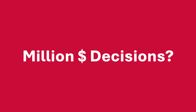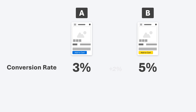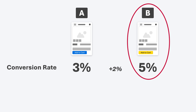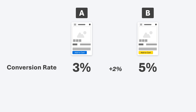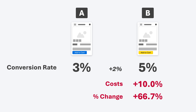You might be wondering how this really helps you make million-dollar decisions. Even if you thought it was a 2% difference, you'd still always go with page B. But if page B comes with costs of an additional 10%, then you might not make that same decision and stick with page A. Percentage change is really important because it helps us determine true performance — in this case, page B is outperforming, and it might make more sense to go with it.